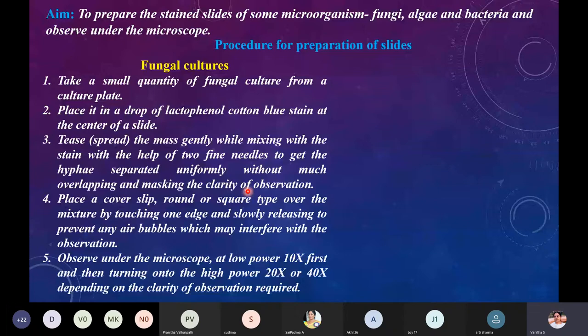Glass cover slips are available in round or square shapes. Very carefully place the cover slip over the mixture by touching one edge and slowly releasing it, to prevent air bubbles which may interfere with observation. Once the cover slip is placed, observe the slide under the microscope — initially at low power (10x), then at high power (20x or 40x) depending on the clarity of observation required.